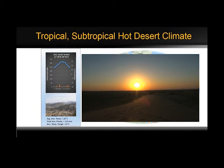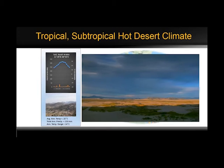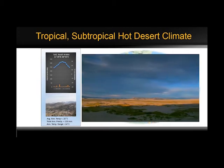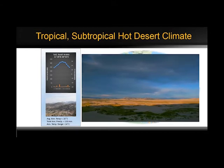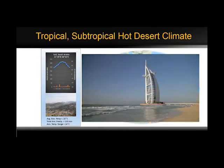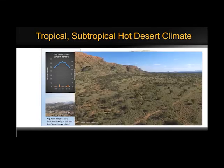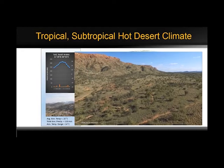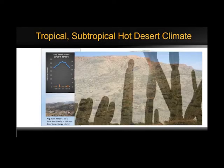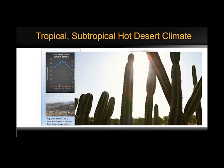Air subsiding from the subtropical high pressure is adiabatically warmed, which reduces the relative humidity of the air. The relative humidity can drop to 10% or less. This extremely low relative humidity causes rapid evaporation of what little surface water there is. The subsiding air also promotes atmospheric stability, further inhibiting precipitation.